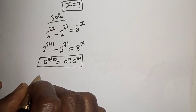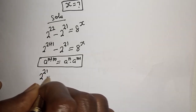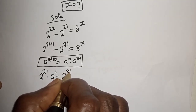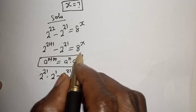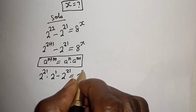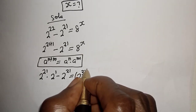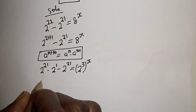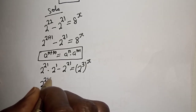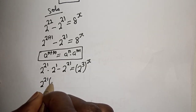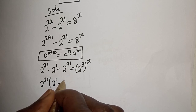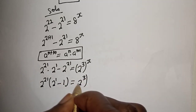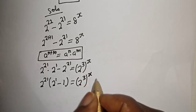Here, 2 raised to power 21 multiplied by 2 raised to power 1, minus 2 raised to power 21, is equal to 8 raised to power x, which can be written as 2 raised to power 3 to the power of x. Then 2 raised to power 21 is common. 2 raised to power 21 bracket: 2 raised to power 1 minus 1, is equal to 2 raised to power 3 to the power of x.